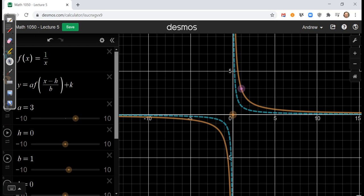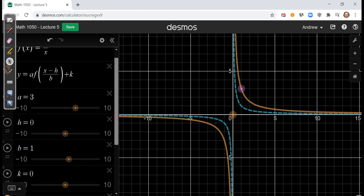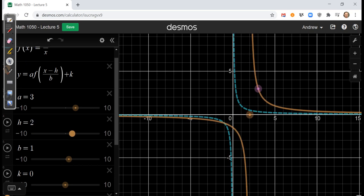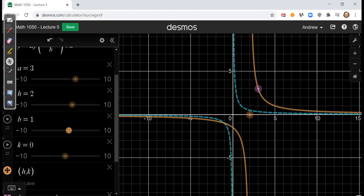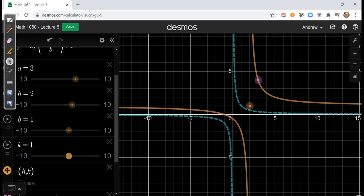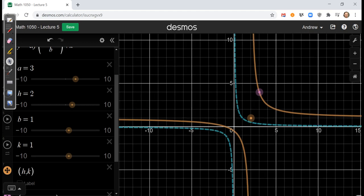Next, we want to shift it to the right by 2. So we just increase the k from 0 to 2. You see that? And then lastly, we wanted to shift it up by 1. And that's our k value. So we shift that up by 1.